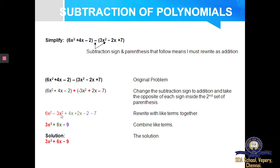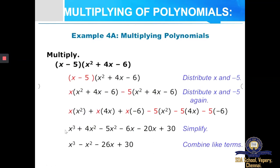We are going to learn about multiplication of polynomials. The given question is: I have to multiply X minus 5 with X square plus 4X minus 6. This is again very simple. Let us first distribute X and minus 5. So first let us multiply X with all the terms of this polynomial, then write minus 5, and again minus 5 has to be multiplied with all the terms of this polynomial. X is multiplied with all the terms of the polynomial, then minus 5 is multiplied with all the terms of the polynomial.